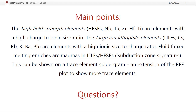Main points: the high field strength elements — niobium, tantalum, zirconium, hafnium, titanium — have a high charge to ionic size ratio. The large ion lithophile elements — caesium, rubidium, potassium, barium, and lead — are elements with a high ionic size compared to the charge. Fluid flux melting enriches arc magmas in large ion lithophile elements compared to the high field strength elements, and this gives us our so-called subduction zone signature. We can show this on a trace element spider diagram, which is basically an extension of the rare earth element plot.